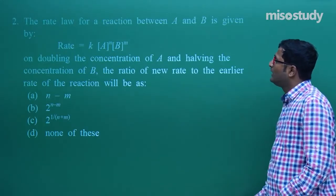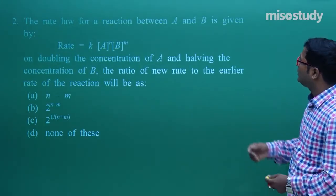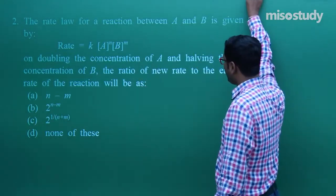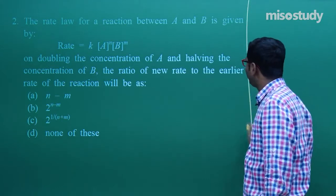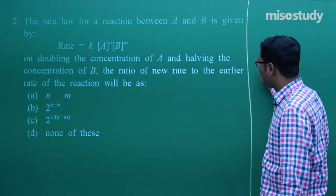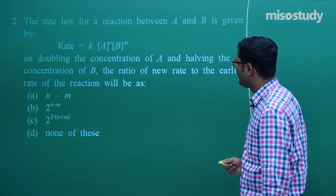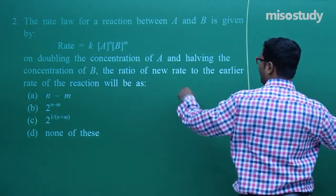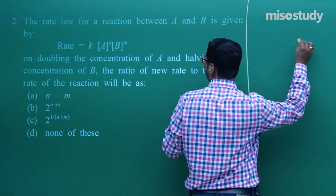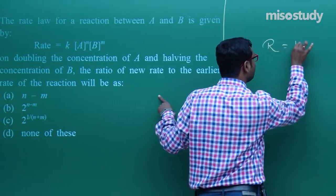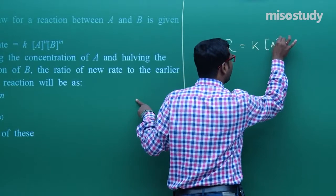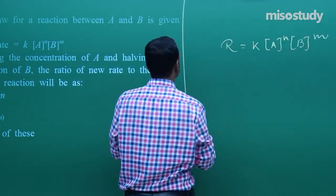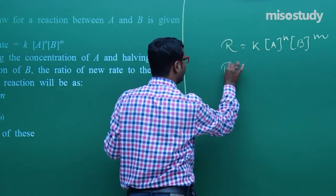Now let us move to question number 2. The rate law for a reaction between A and B: on doubling the concentration of A and halving the concentration of B, what is the ratio of the new rate to the earlier rate? Write R = K[A]ᴺ[B]ᴹ. This is the initial rate. The new rate R' = K(2A)ᴺ(B/2)ᴹ.